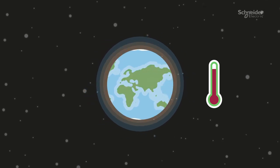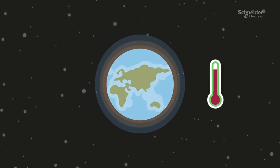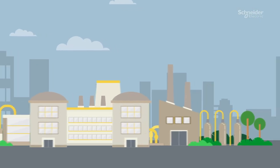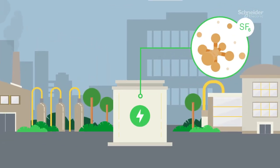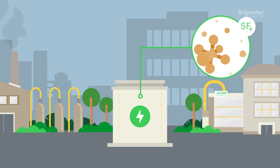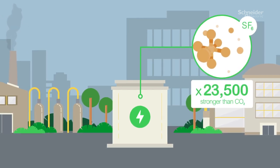Reducing greenhouse gases is key to fighting climate change. Everyone knows about CO2, but sulfur hexafluoride, SF6, is another greenhouse gas. And it is 23,500 times stronger than CO2.